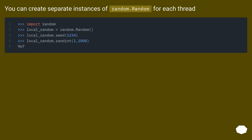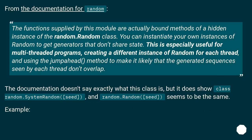You can create separate instances of random.Random for each thread. From the documentation for random, the functions supplied by this module are actually bound methods of a hidden instance of the random.Random class. You can instantiate your own instances of random to get generators that don't share state. This is especially useful for multi-threaded programs — creating a different instance of random for each thread and using the jump-ahead method to make it likely that the generated sequences seen by each thread don't overlap.